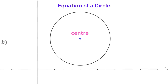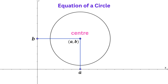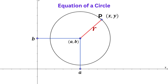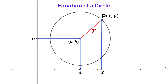Suppose we have a circle whose centre has coordinates A, B. The X coordinate would be A and the Y coordinate would be B. Suppose we have a random point on the circumference called P. We could draw a radius from the centre of the circle to P. Let's label the X coordinate of P as X and the Y coordinate Y. We will draw a red right-angled triangle inside the circle.